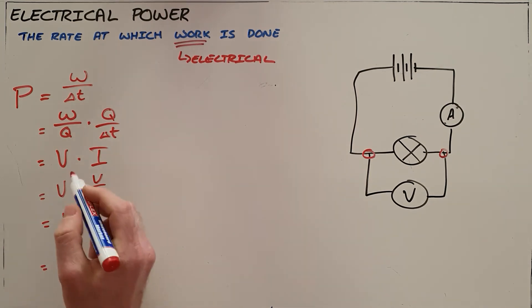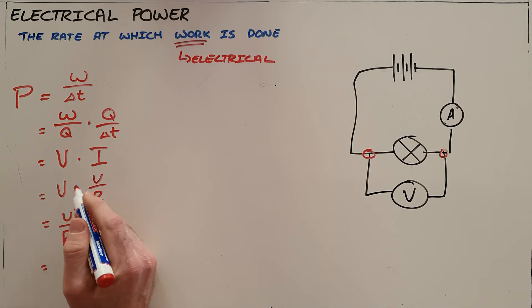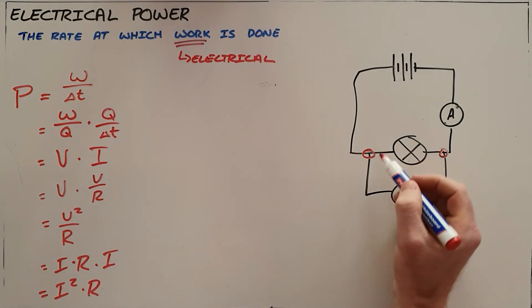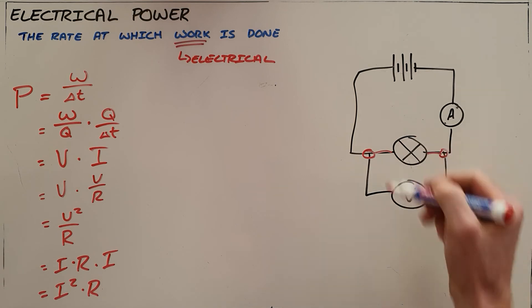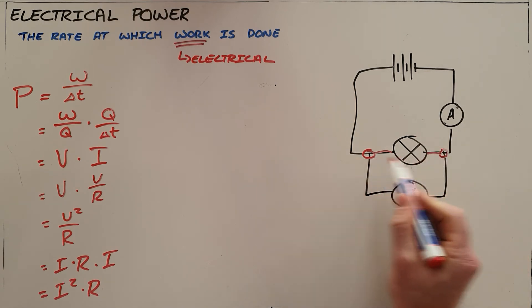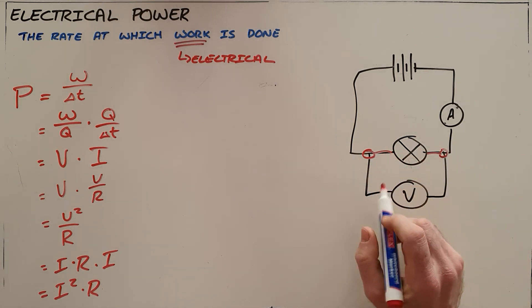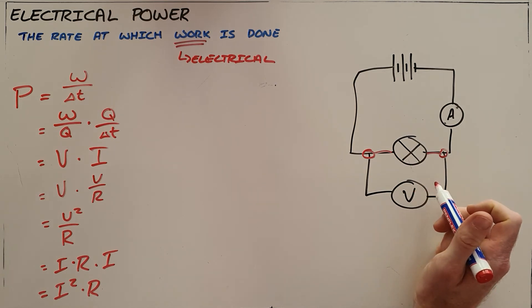We can also, since we know that voltage is current times resistance, find the following formula: power is equal to I squared times R. Again, all of these refer to the resistance of a specific resistor that we are determining the power for, the current that is passing through that resistor, and the voltage across the ends of that resistor.